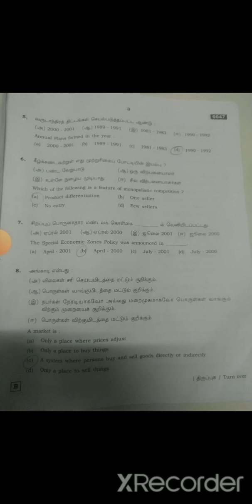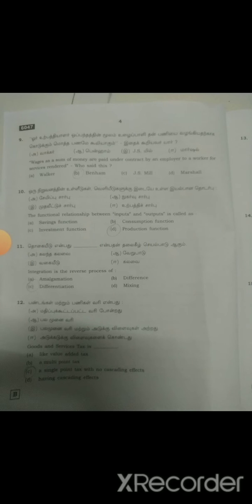Seventh one: The Special Economic Zones policy was announced in Option B, April 2000. Eighth one: A market is Option C, a system where persons buy and sell goods directly or indirectly. Ninth one: Wage as a sum of money are paid under contract by an employer to a worker for service rendered. Who said this? Option B, Benham.